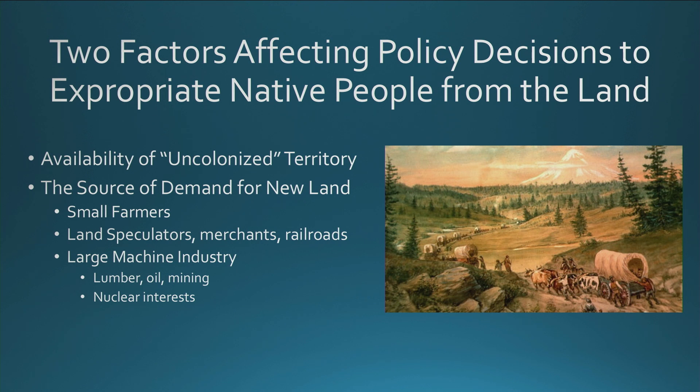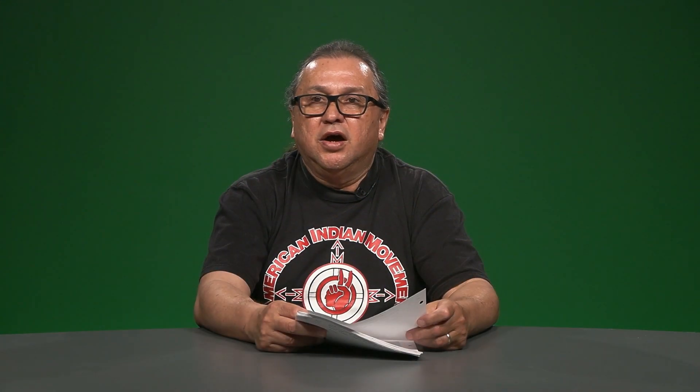The United States takes over half of Mexico. And then from 1860 to the present, large-scale machine industry, lumber, oil, mining interests, and nuclear interests are going to take over in the 1960s. So there are three major periods that are impacting Native peoples as these lands are taken from them.